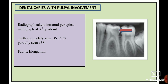Now let's discuss a radiograph showing dental caries with pulpal involvement. The teeth that are completely seen are 35, 36, and 37, and partially seen is 38. The trabeculae shows a step ladder pattern, which is a normal feature. The fault of the radiograph is elongation.